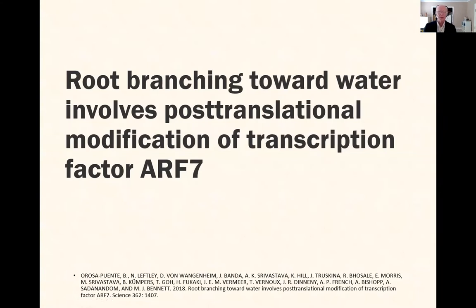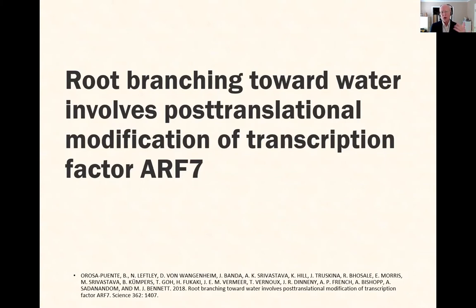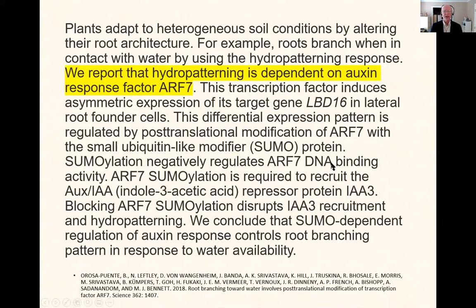Here's the second example: 'Root Branching Toward Water Involves Post-Translational Modification of Transcription Factor ARF7.' There's a lot of jargon here, but it's still a pretty good title. It talks about the result — post-translational modification — you get an idea of what they did. It mentions the gene or transcription factor involved. If you're interested in ARF7 or root branching, you'd know this is a paper you want to read. And looking at the abstract, that same result is right there.